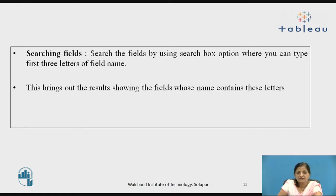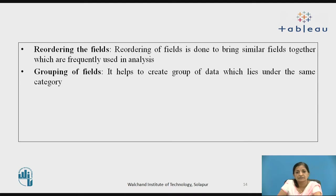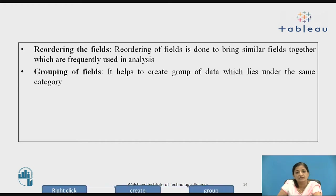You can search fields by using the search box option where you can type the first three letters of the field name. This brings out results showing the fields whose name contains those letters. Next comes reordering the fields. Reordering of fields is done to bring similar fields together which are frequently used in analysis.